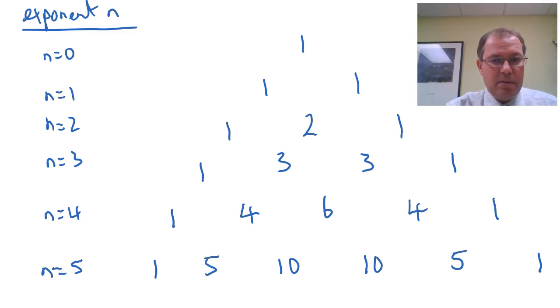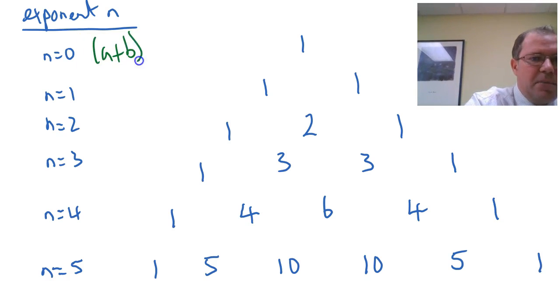So here are the numbers written out for Pascal's triangle for the first 6 rows. Notice that n equals 0 was for the a plus b to the power 0.